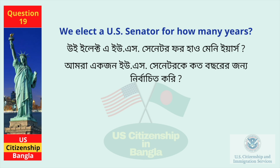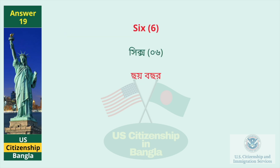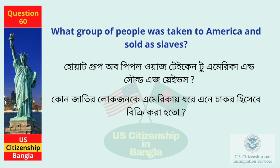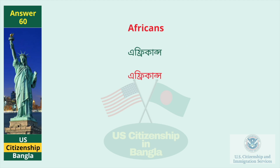We elect a U.S. Senator for how many years? Six. What group of people was taken to America and sold as slaves? African Americans.